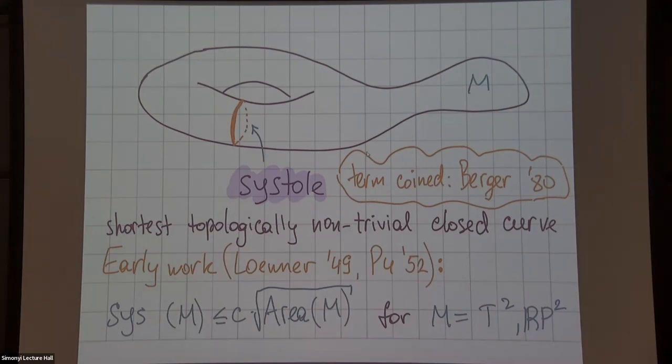The model example of systolic inequality says that the length of the shortest non-contractible loop on the surface can be bounded in terms of the area. For the torus, it doesn't matter which definition of the systole you use. They proved it for the two-dimensional torus and the two-dimensional projective plane for any metric on them.